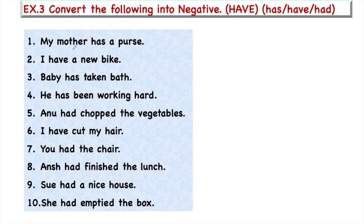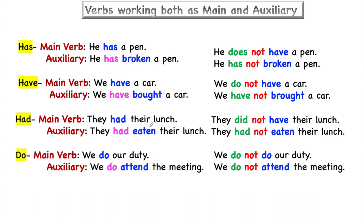In this exercise we convert sentences containing 'has,' 'have,' and 'had' — the have family. We need to check whether these verbs are working as a main verb or as an auxiliary verb, because the rules will be different in each case. If these verbs are alone in the sentence, they are working as a main verb. But if they are accompanied by another main verb, then they work as an auxiliary or helping verb.